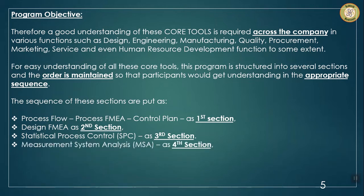Then comes measurement system analysis, or MSA, which is kept as the fourth section because some of the concepts of statistical process control are utilized here. It will be easier to understand and internalize the concepts of MSA, particularly complex parts like the ANOVA method, once the statistical process control concept is clear to the participant.